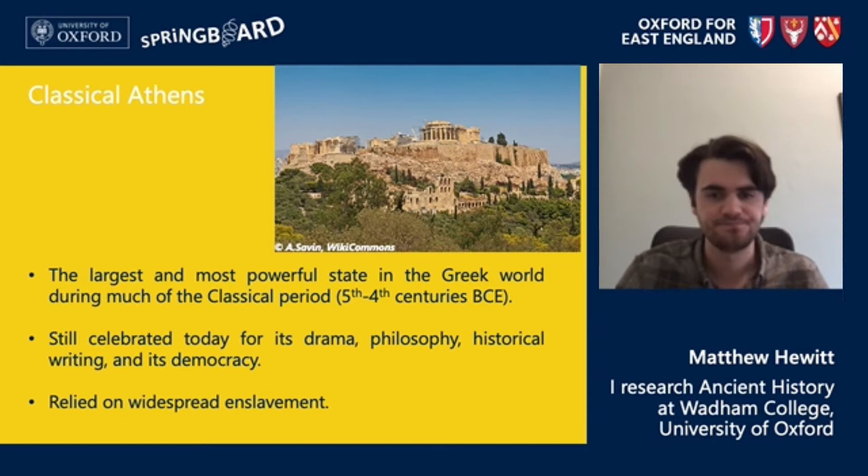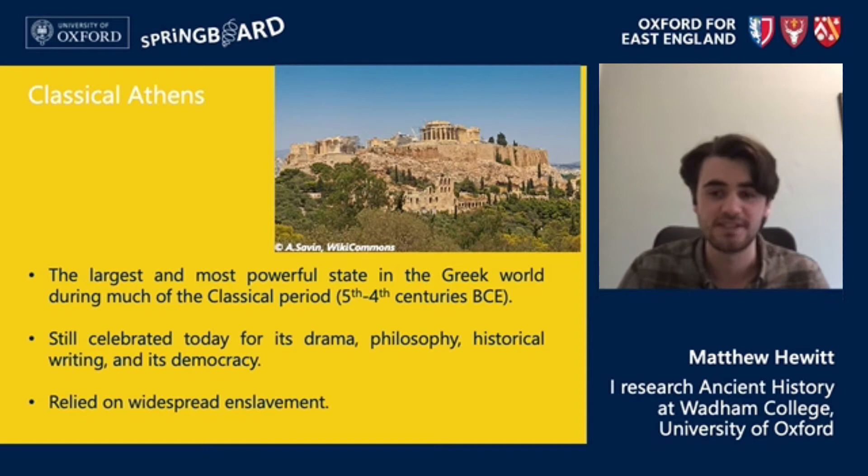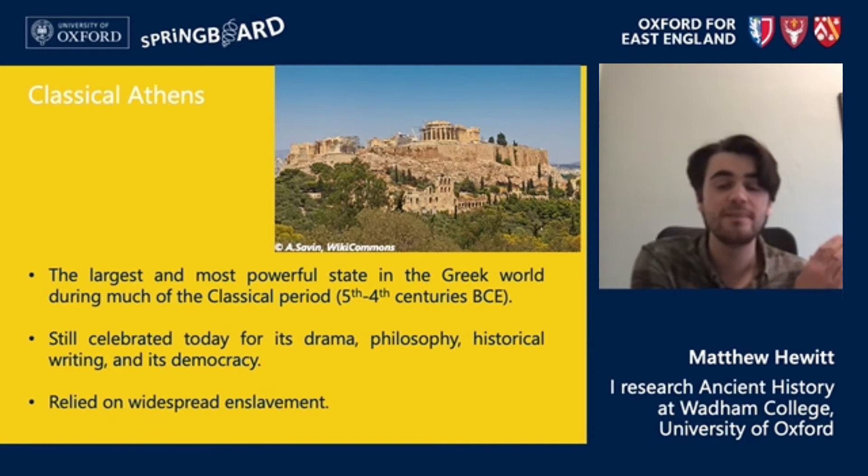But more recently scholars have been much more willing to identify the exclusionary elements of Athenian democracy. Those with a stake in its government were a relatively small group of citizen males, representing only a fraction of the city's population. Women were excluded completely, as were those without two citizen parents, and at the extreme end of this exclusion were slaves.